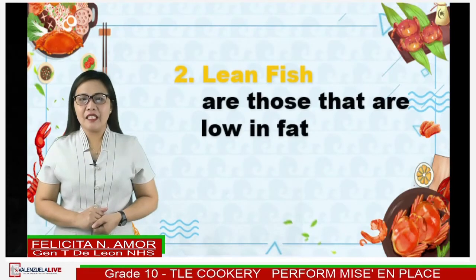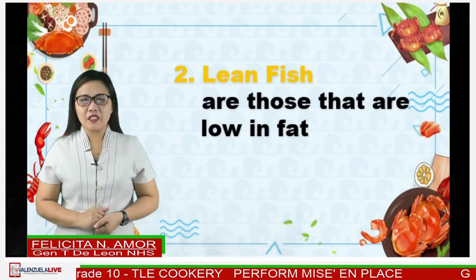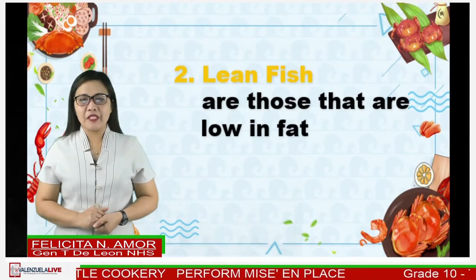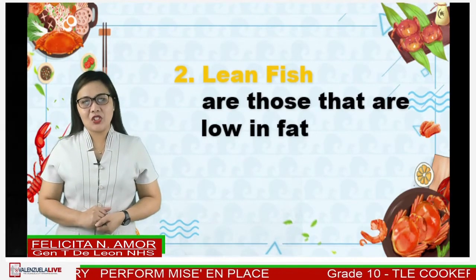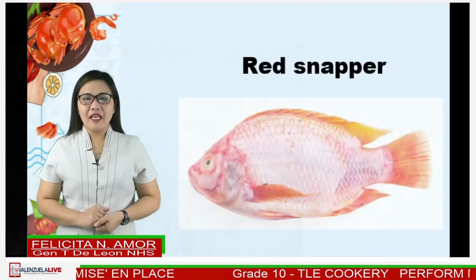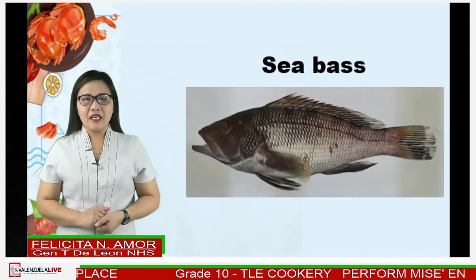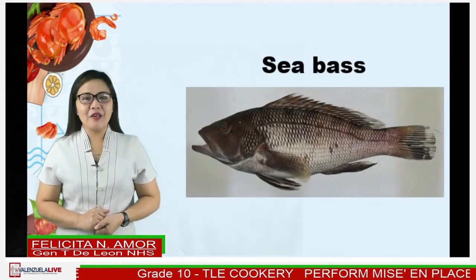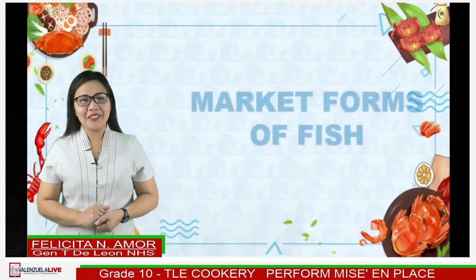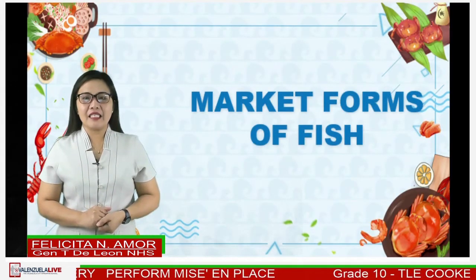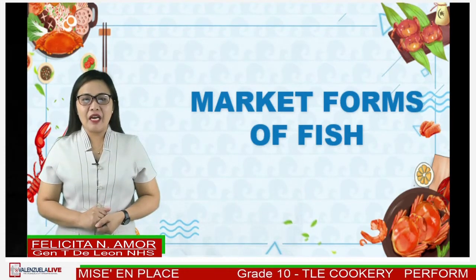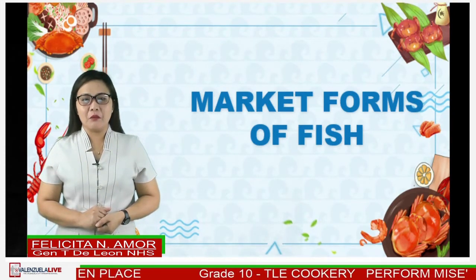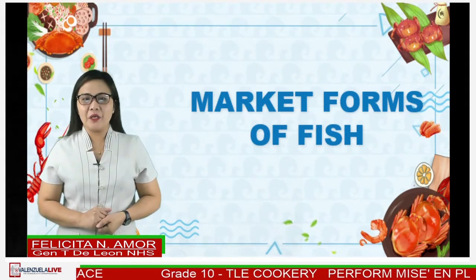Another type is lean fish — fish that are low in fat with less than 5 percent fat content, also called white fish. Examples are sole, cod, red snapper, and sea bass. It's important to recognize the kind of fish that we are going to prepare and cook so that we can identify what cooking methods are suitable to prevent overcooking and undercooking. Overcooking seafood can cause loss of flavor and nutritive value. Undercooked seafood can lead to food poisoning.